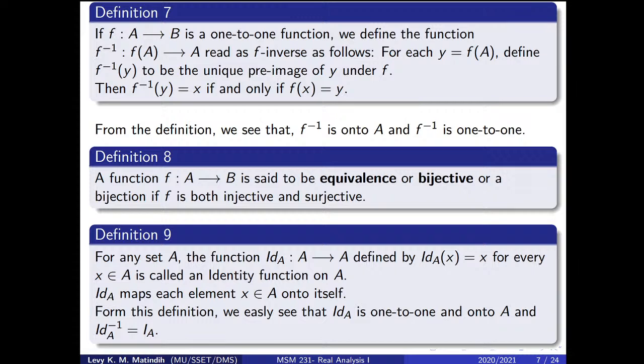A function F mapping elements of set A to elements of set B is said to be bijective, or a bijection, if F is both injective (one-to-one) and surjective (onto). Then we call that function a bijective function.